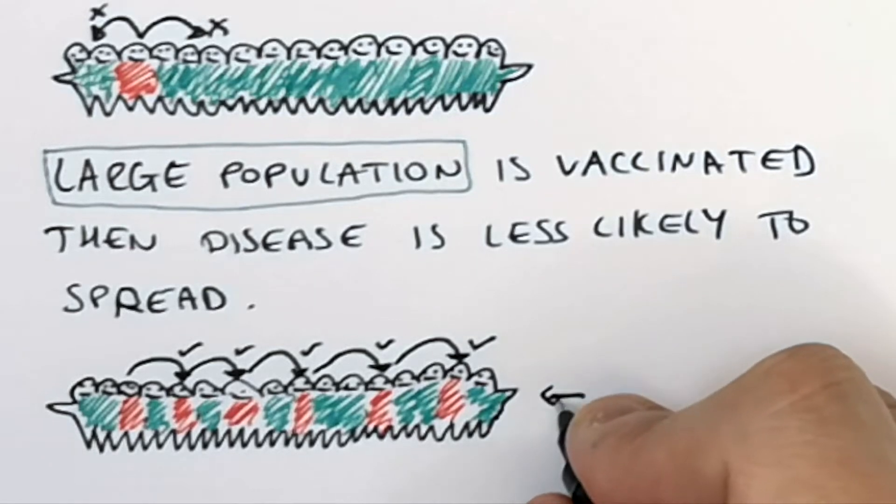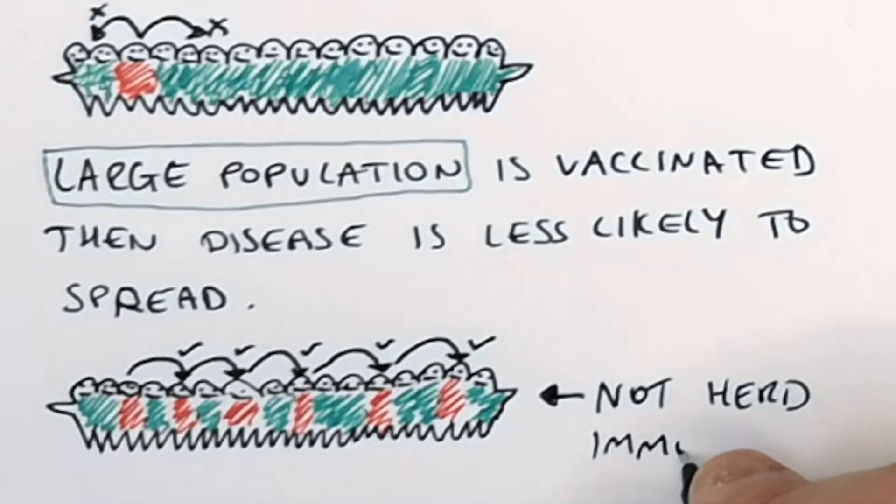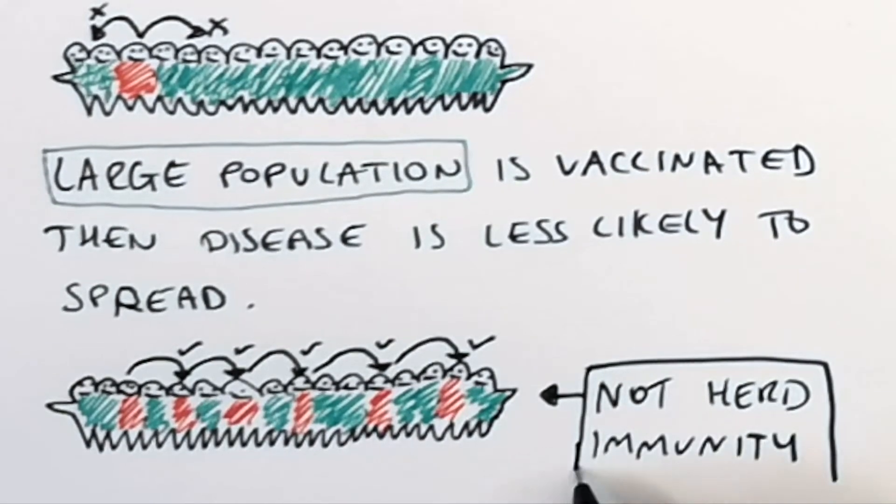Aiming for 100%. Because the top is herd immunity, and the bottom is not herd immunity, because too many people have not been vaccinated.